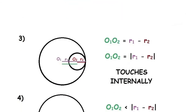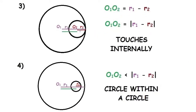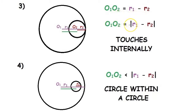When the two circles touch internally, the green line is the distance between the two centers O1O2, the purple line is the radius of the bigger circle R1, and the brown line is the radius of the smaller circle R2. Here you can see that O1O2 equals R1 minus R2. When the two circles touch internally, O1O2 is equal to the modulus of R1 minus R2. We use modulus because the distance between two points can never be a negative value.